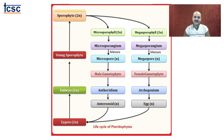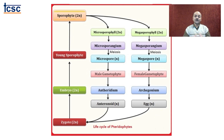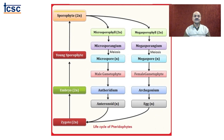Meiosis is the changing phase in the life cycle. Microspores and megaspores are the haploid cells. The microspore germinates to give rise to the male gametophyte, and the megaspore germinates to give rise to the female gametophyte. Male gametophyte gives rise to the antheridium; female gametophyte gives rise to the archegonium. If antheridia and archegonia are together on the same thallus, that is called monoecious or bisexual. If they are separated on two different thalli, that is a dioecious or unisexual thallus.